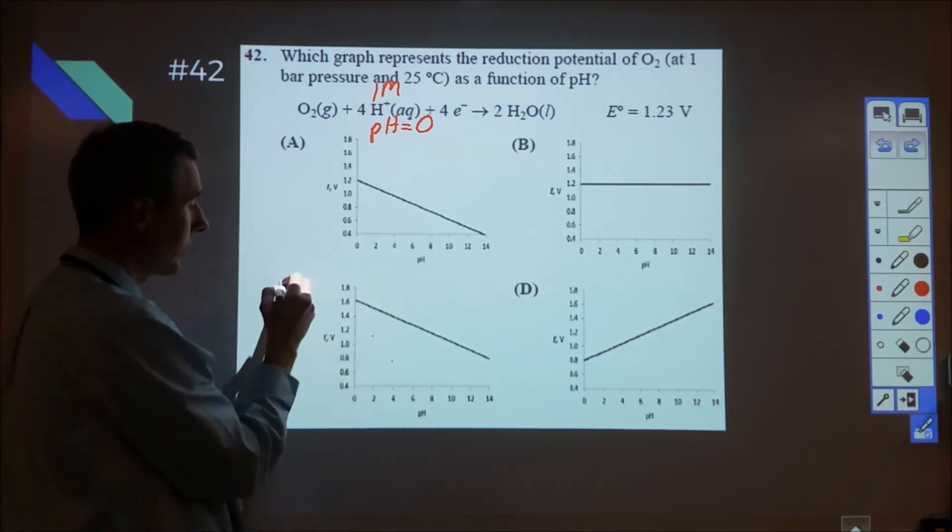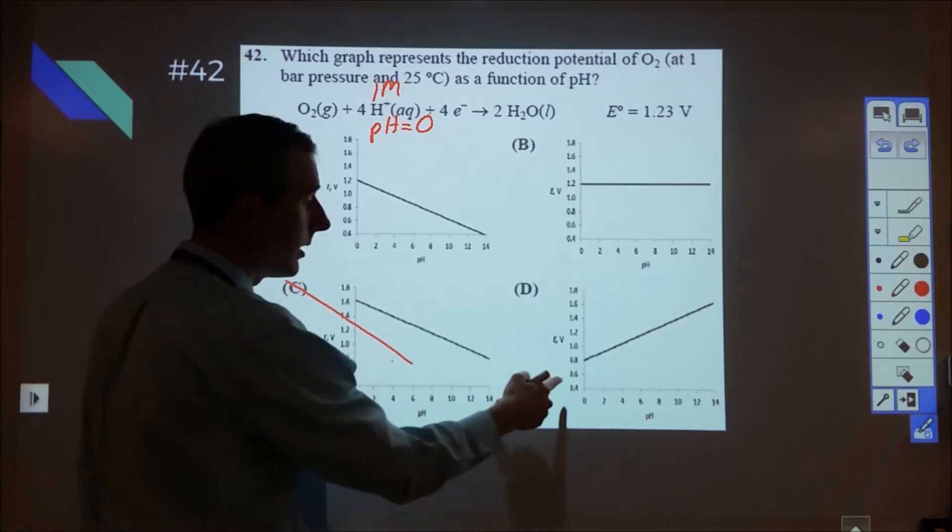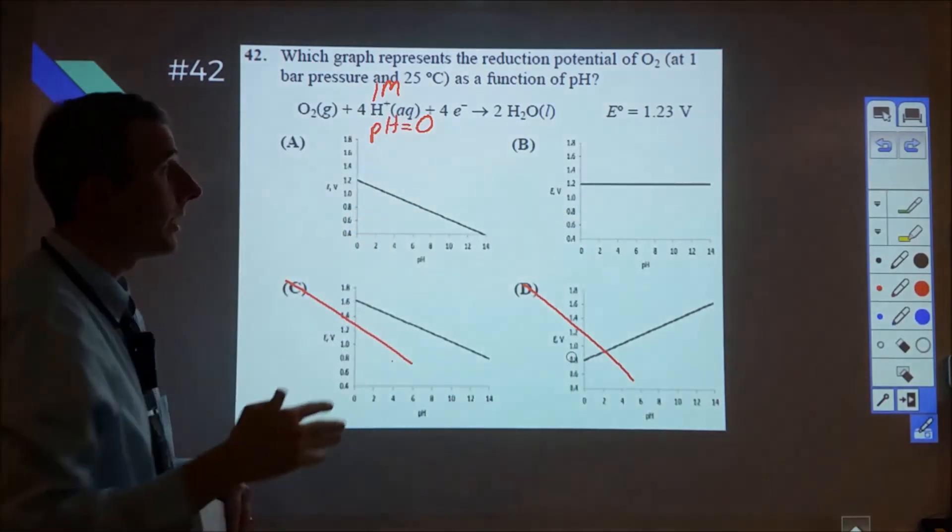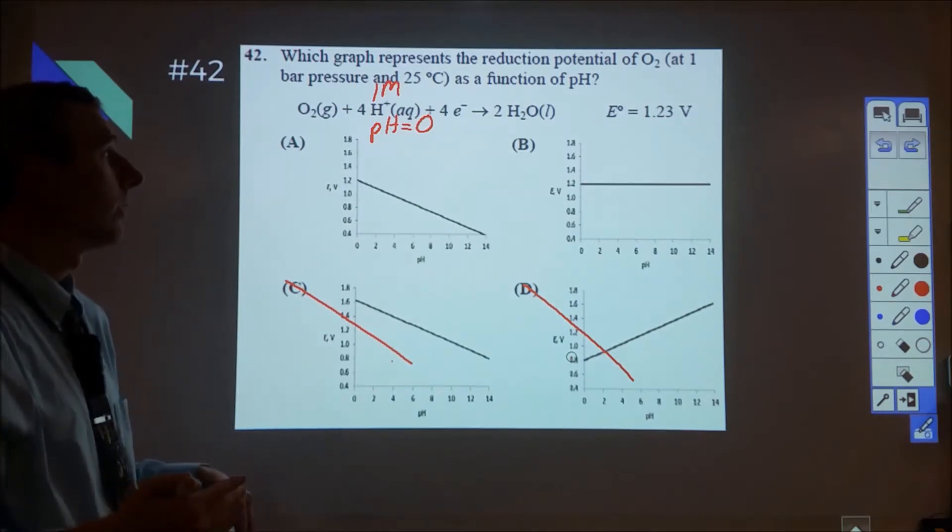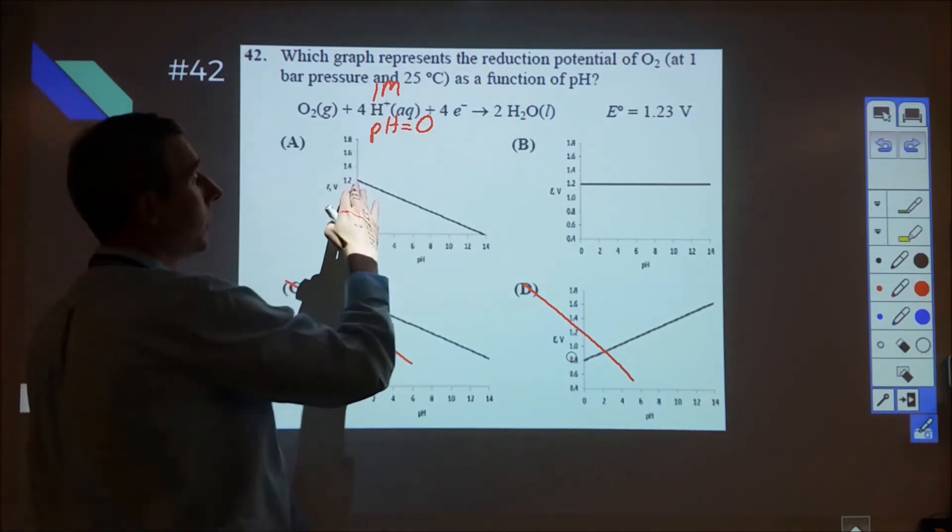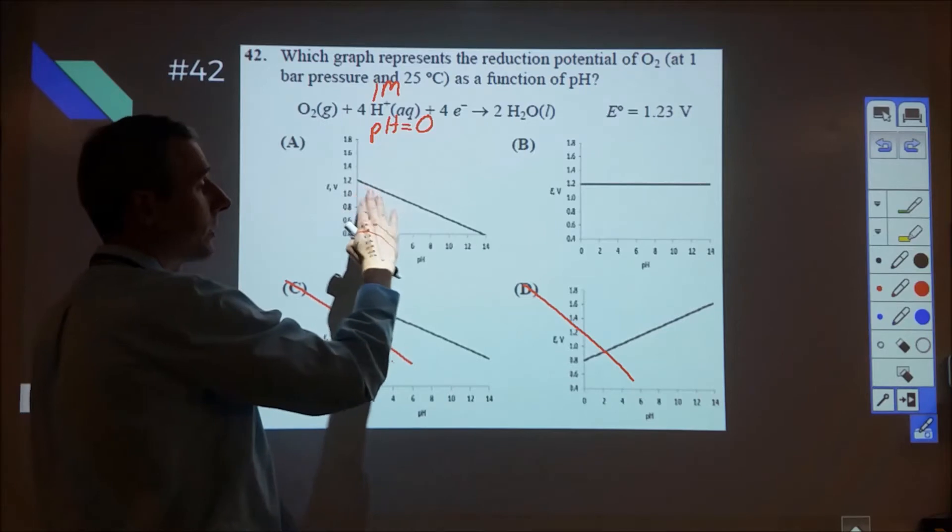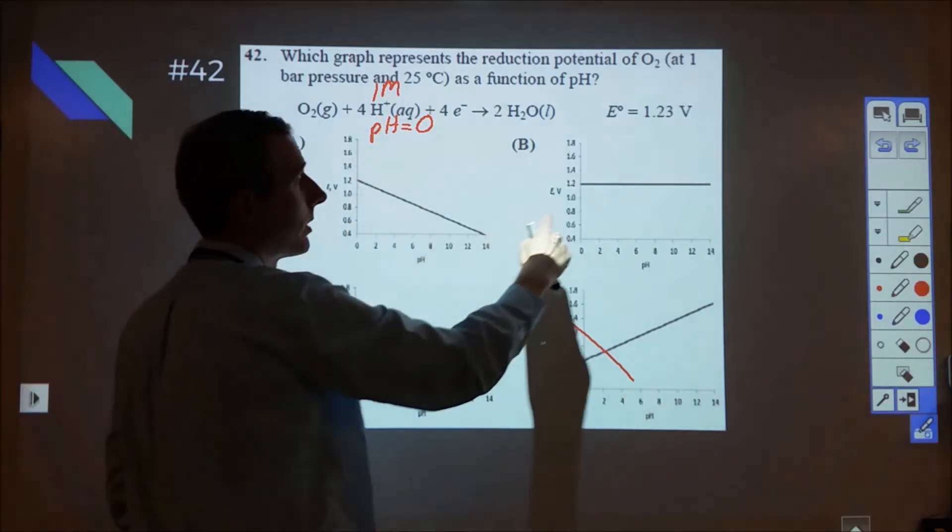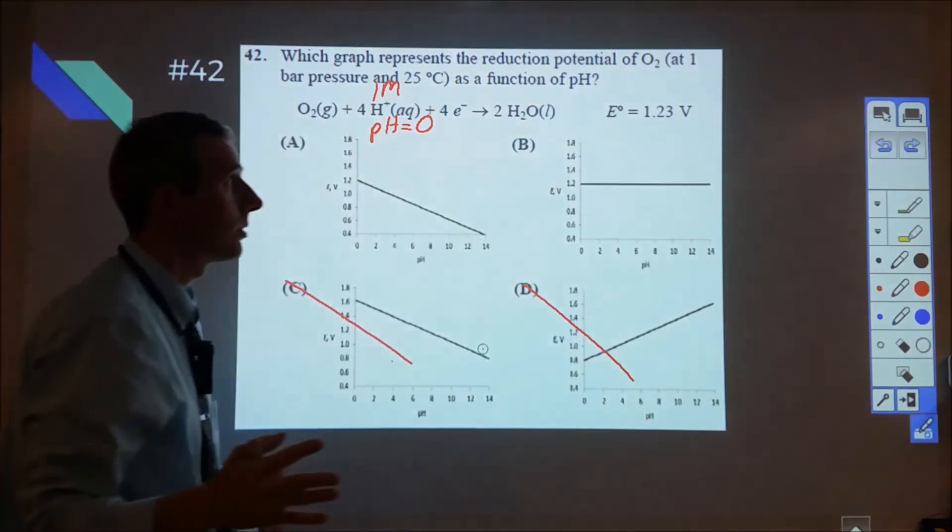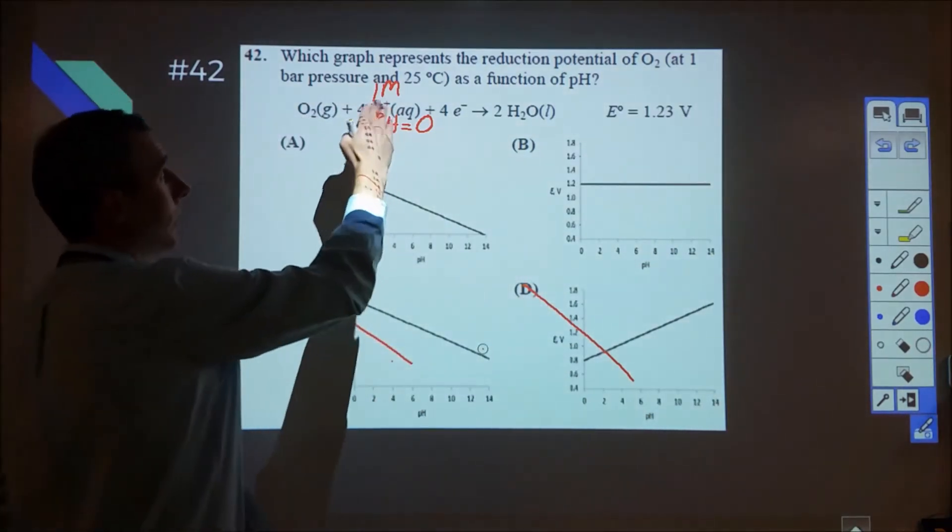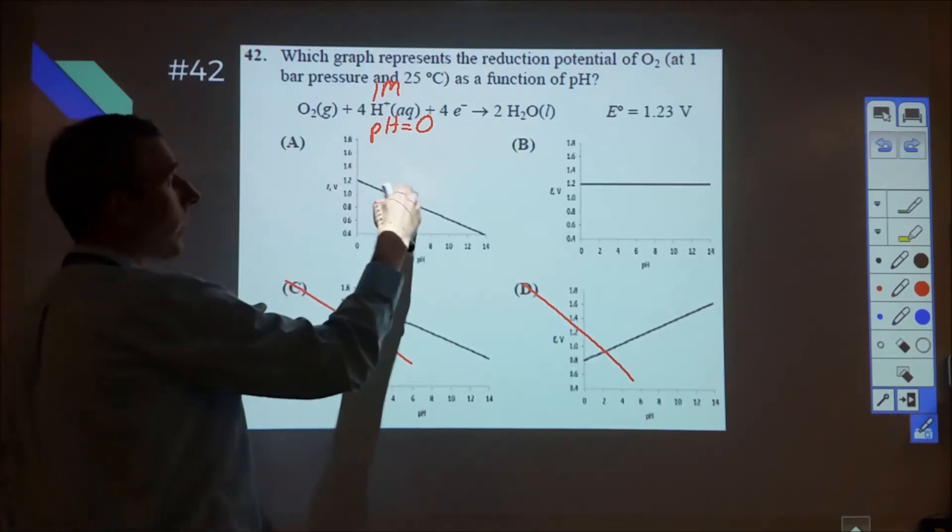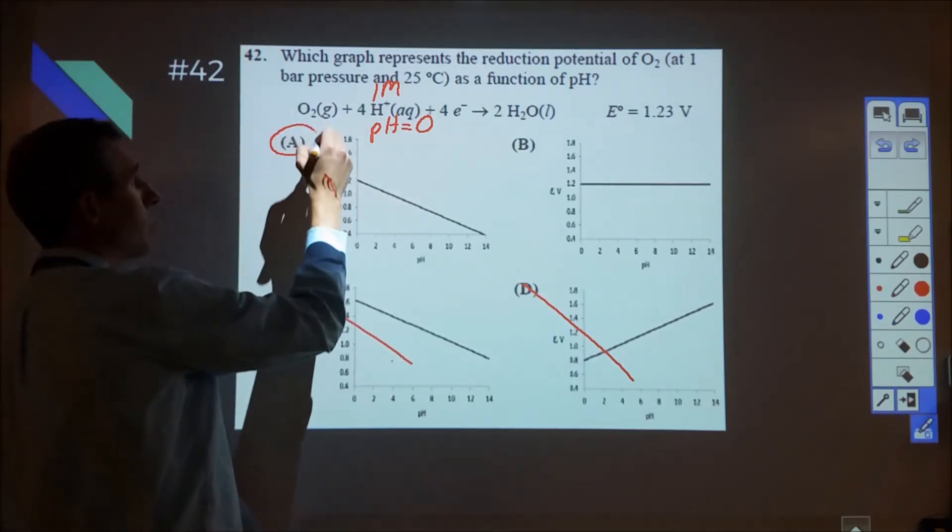C starts above 1.6, that's incorrect. D starts at 0.8, that's incorrect. So we're looking at either A or B. Now we want to go through and figure out what's going to happen as I increase the pH and my H+ concentration goes up, I'm either looking at a decrease in voltage or I'm looking at a static voltage. And we know, of course, that if we alter this concentration, that according to Nernst's law, we're going to see a drop in voltage, and therefore A is the best choice.